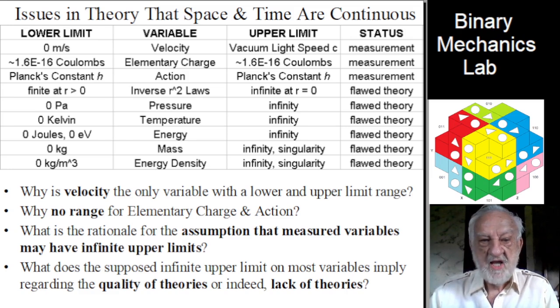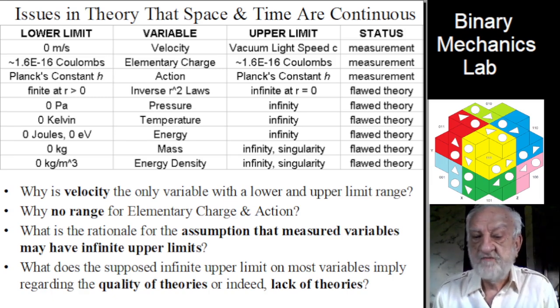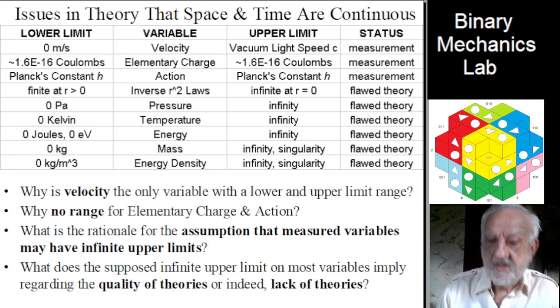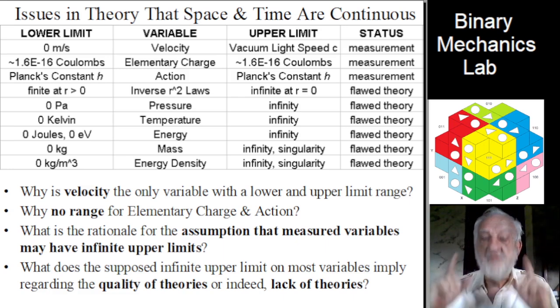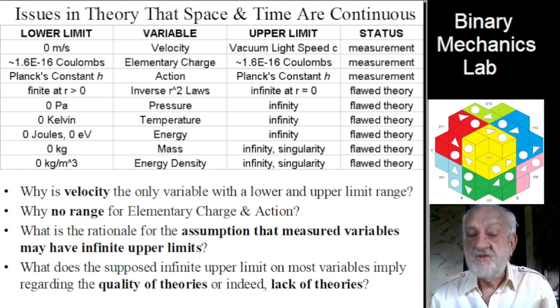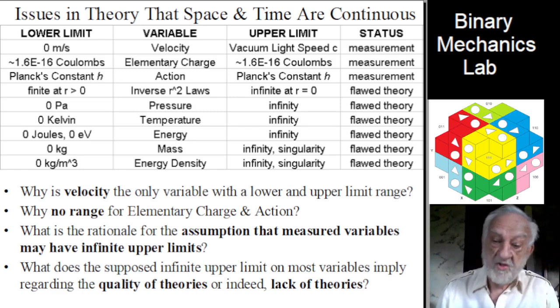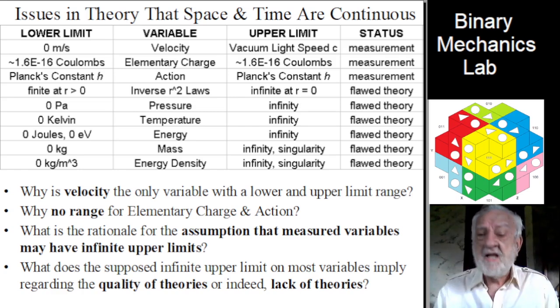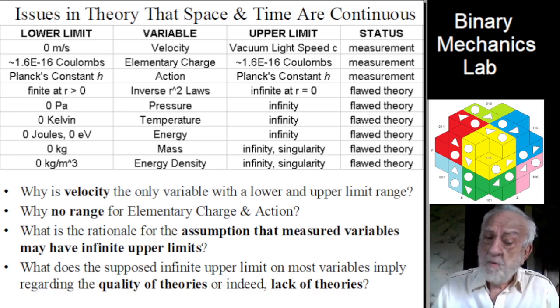The inverse r-squared laws for gravitational, electric, and other fields give finite values for distance r greater than 0, but infinite results at r equals 0, a clear indication that partial quantization is flawed theory.